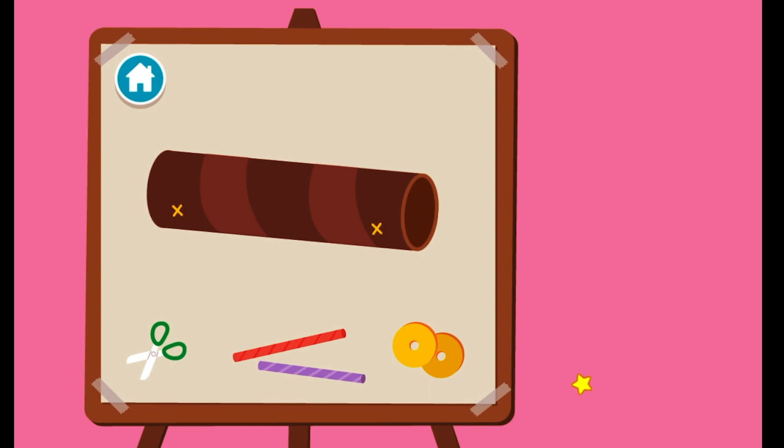Upcycle step two, time to build our race car. First, we have to cut holes for the axles. Drag the scissors to the car. Next, we have to add the axles.